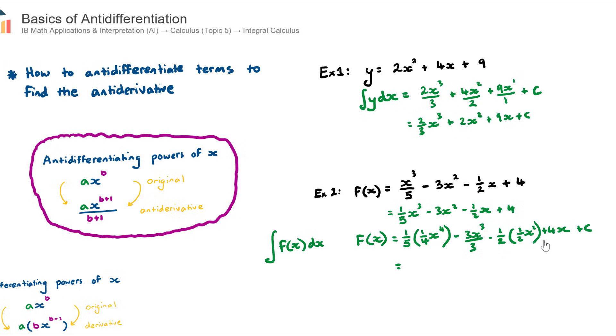Let's now clean this up. This first term here, we multiply the two fractions together. 1/5 multiplied by 1/4 is 1/20. We multiply the tops and the bottoms. So this would be 1/20 x^4. Subtract. Now, 3/3 is just one. So this would be subtract x^3. The third term, we multiply the two fractions together. So negative 1/2 multiplied by 1/2 is negative 1/4. So subtract 1/4. And then plus 4x + c. So there we have it. We have antidifferentiated the f(x) function to get its antiderivative. That's this line here.